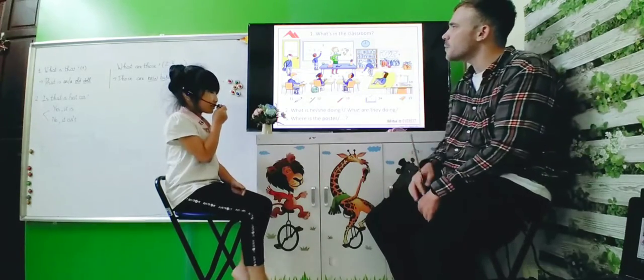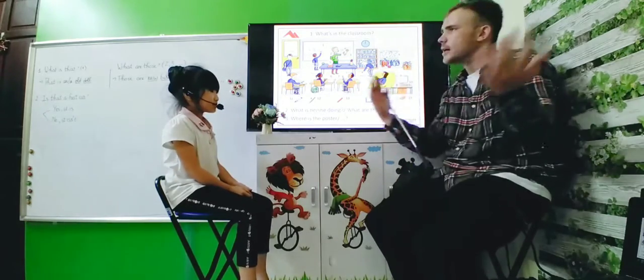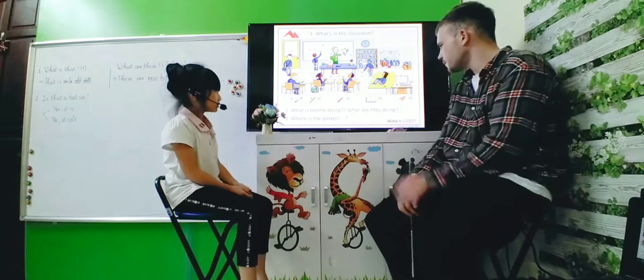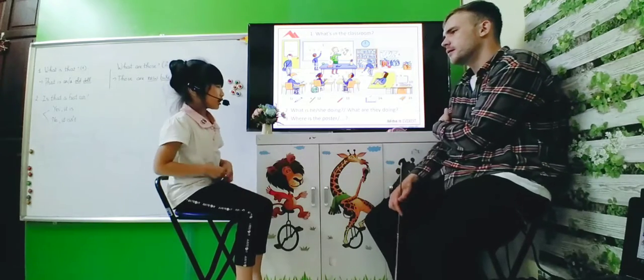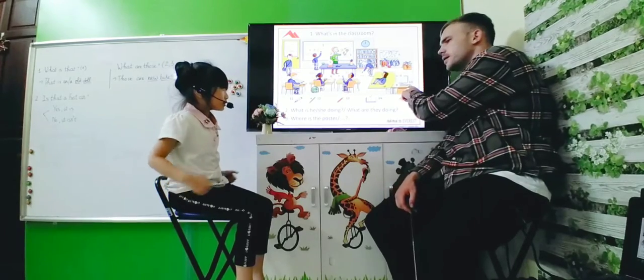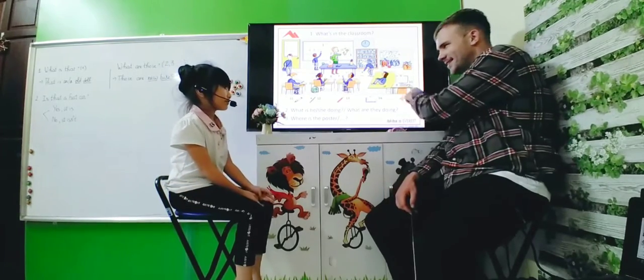Good. Look at our picture, Lisa. What's in our classroom? There is a... what? What is that? There is a computer. Yes. What is this? There is a board. Good.